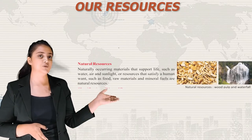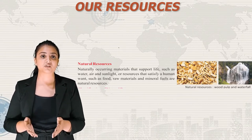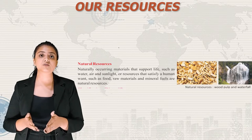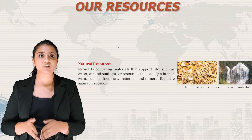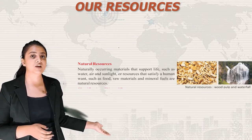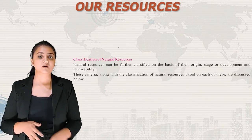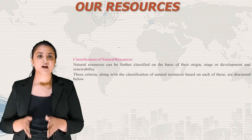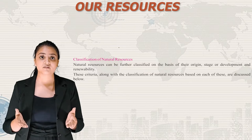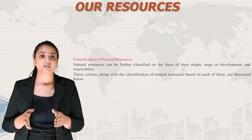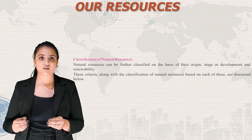Naturally occurring materials that support life, such as water, air and sunlight, or resources that satisfy a human want, such as food, raw materials and mineral fuels, are natural resources. Natural resources can be further classified on the basis of their origin, stage of development and renewability. These criteria, along with the classification of natural resources based on each of these, are discussed below.